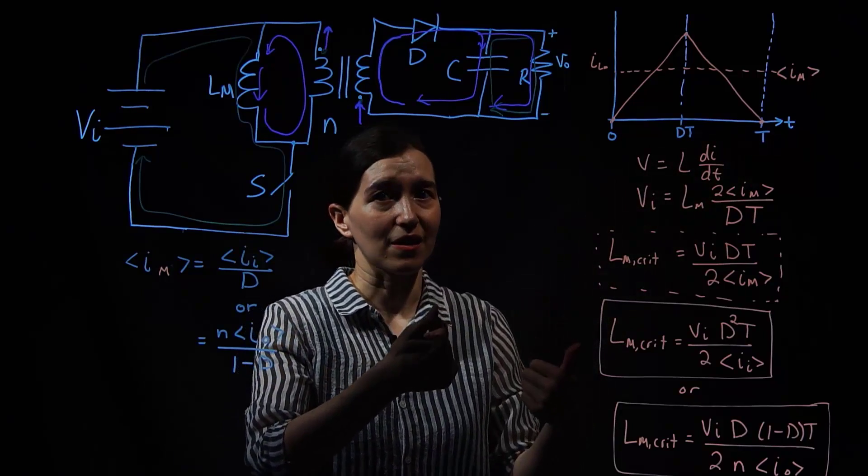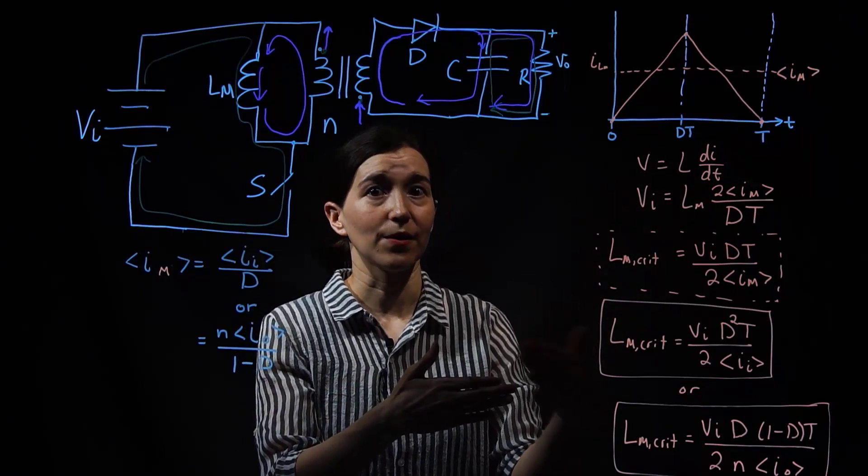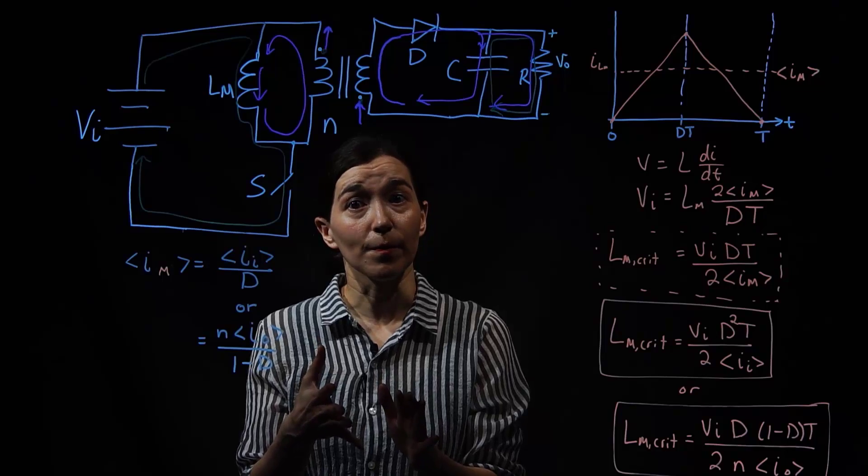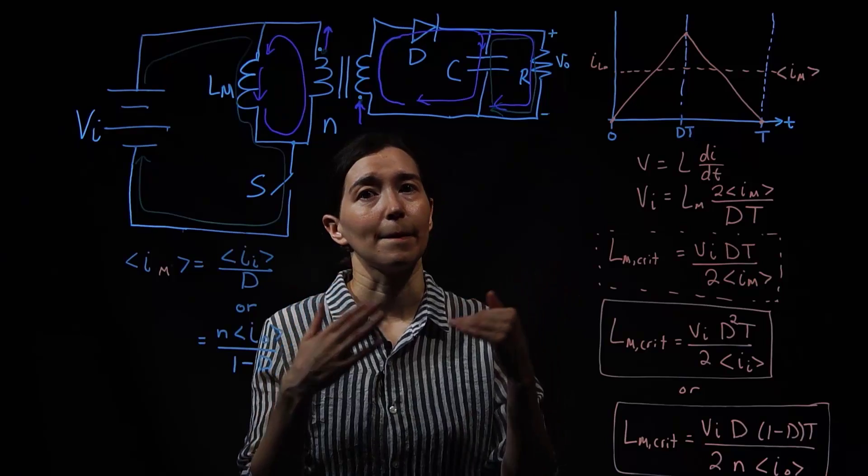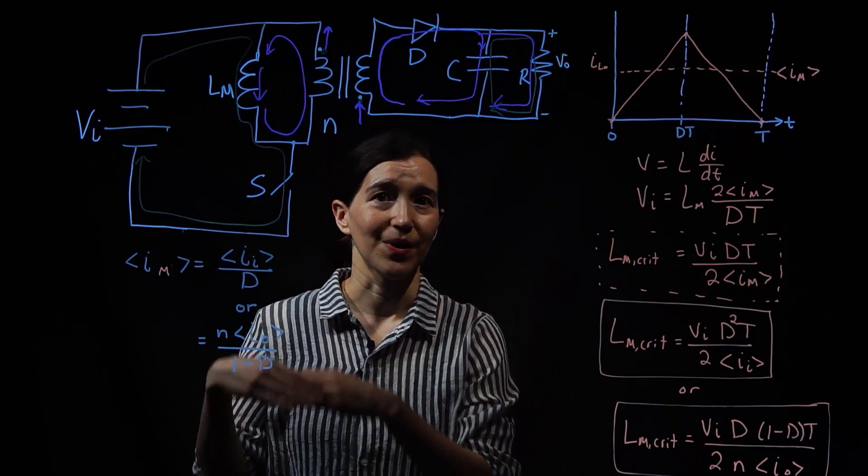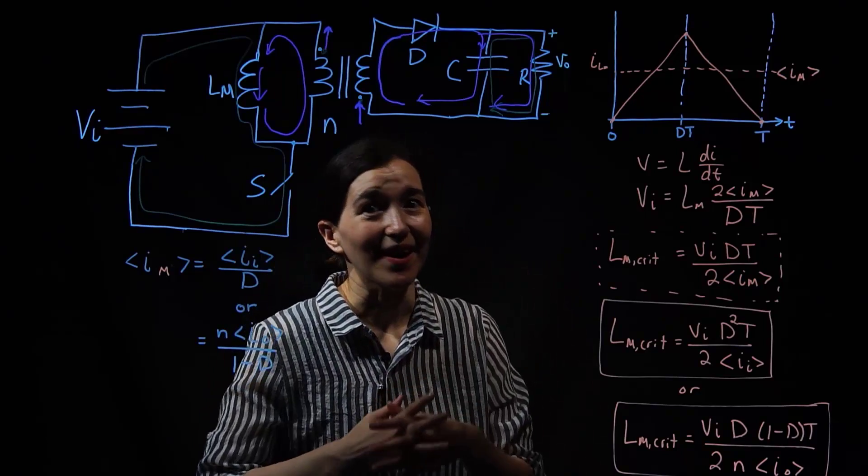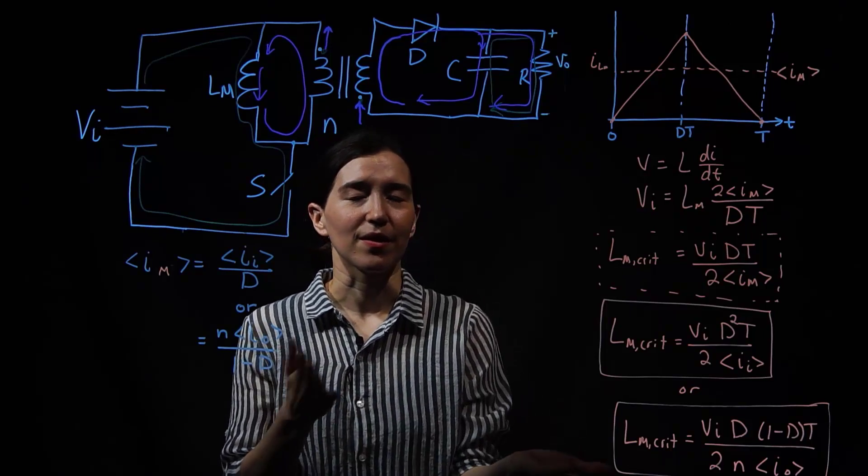If you pick this value, you would be exactly at boundary conduction mode like this. If you increase this value above the critical value, you will be in continuous conduction mode. If you pick a lower value than the critical inductance, you will be in discontinuous conduction mode. So enjoy designing your flyback converters with these equations.